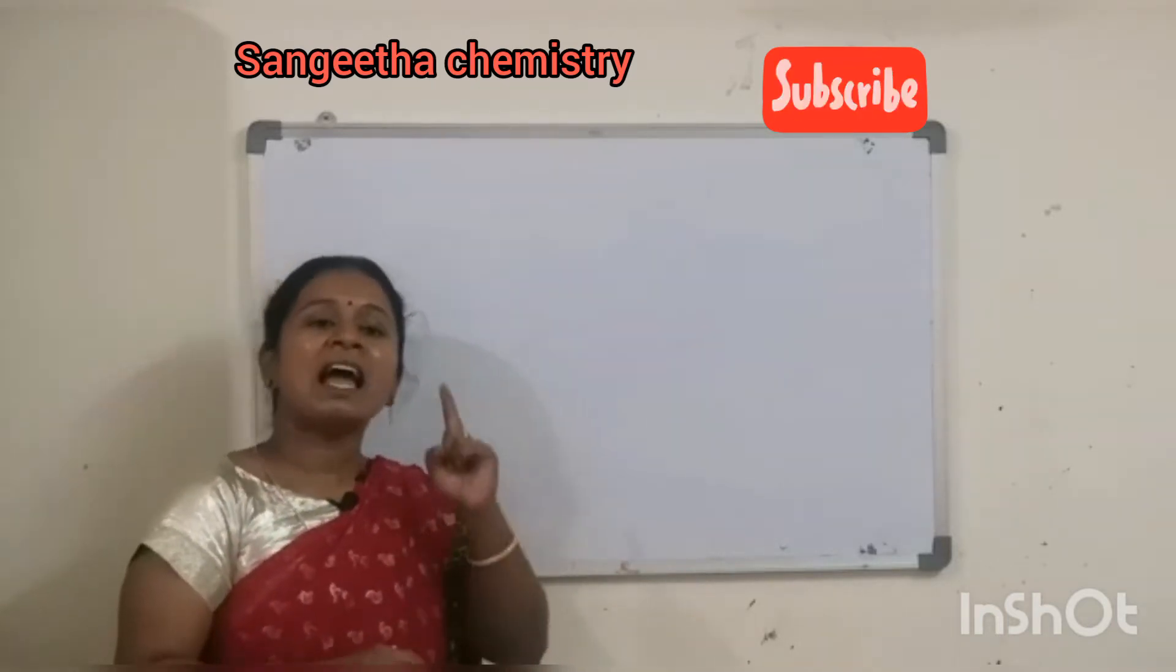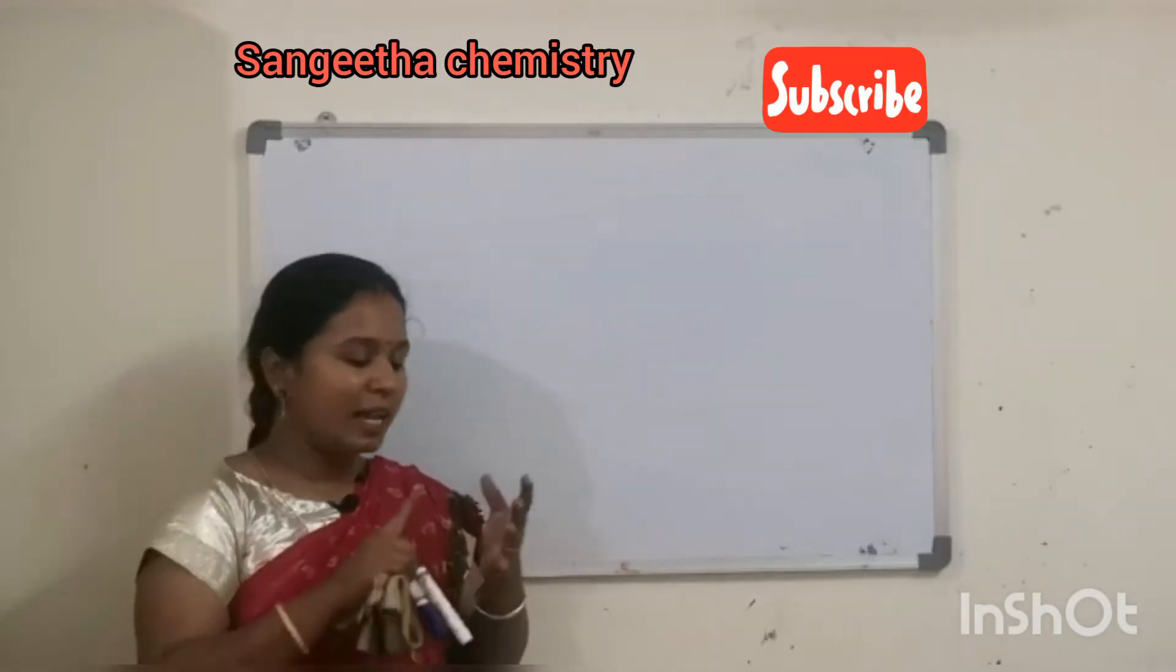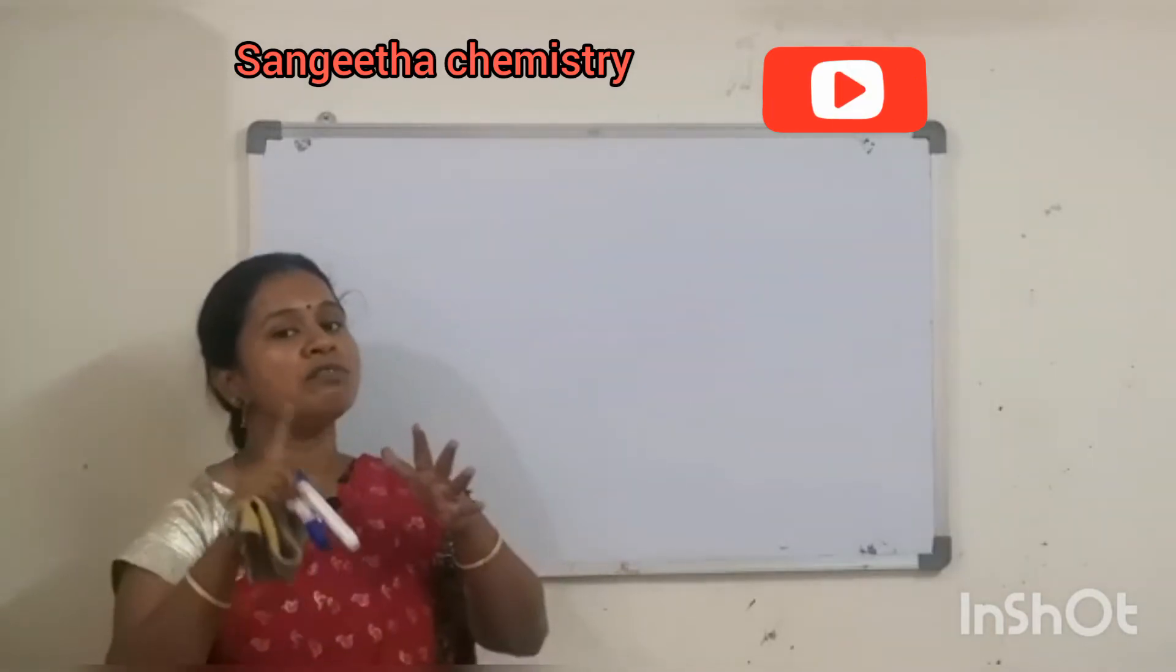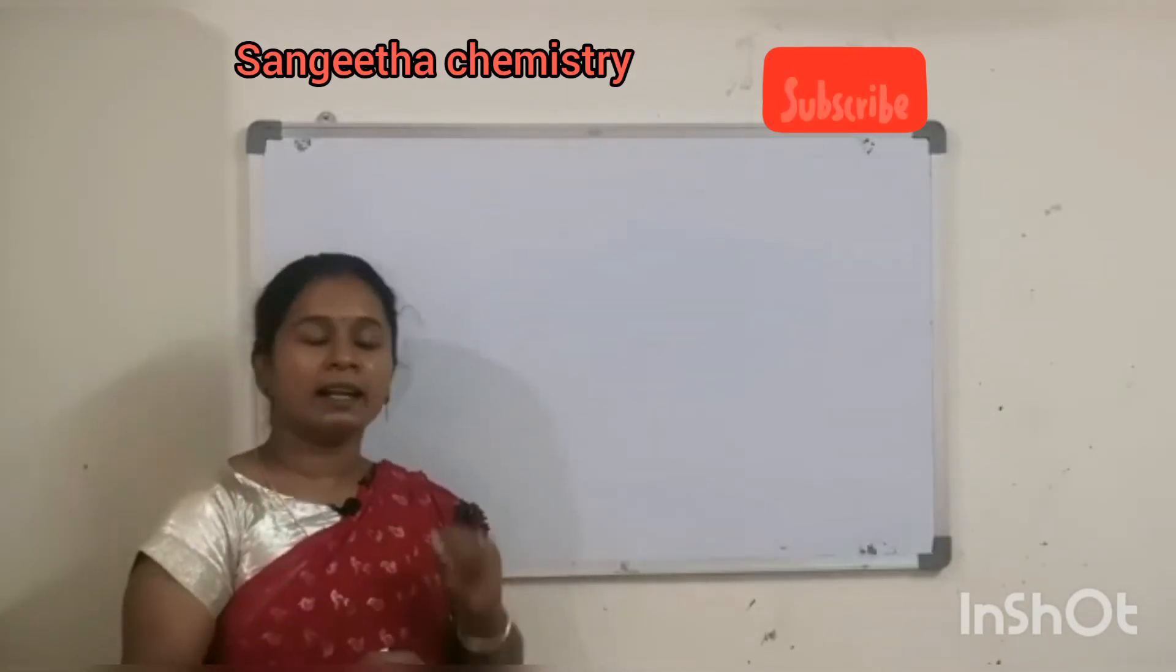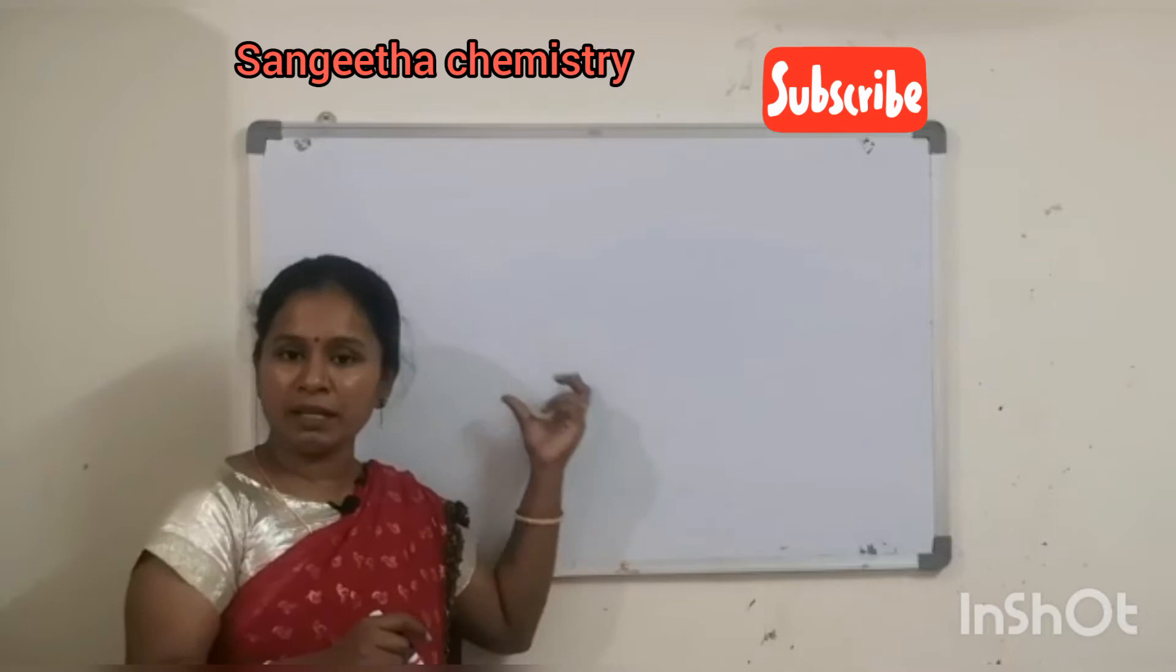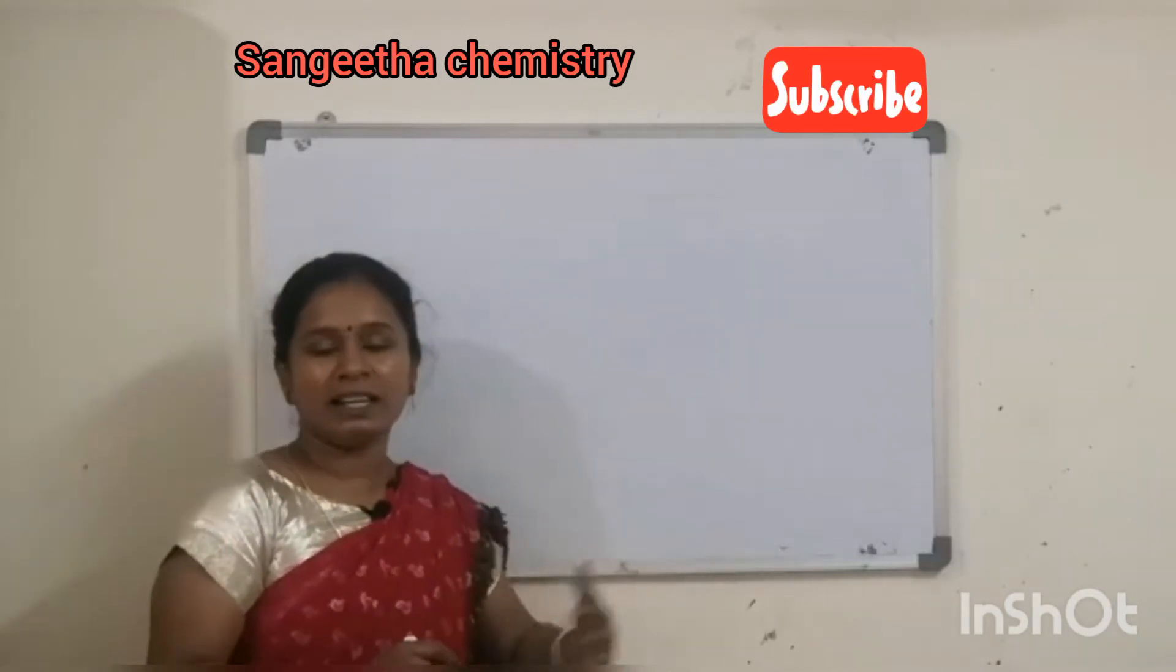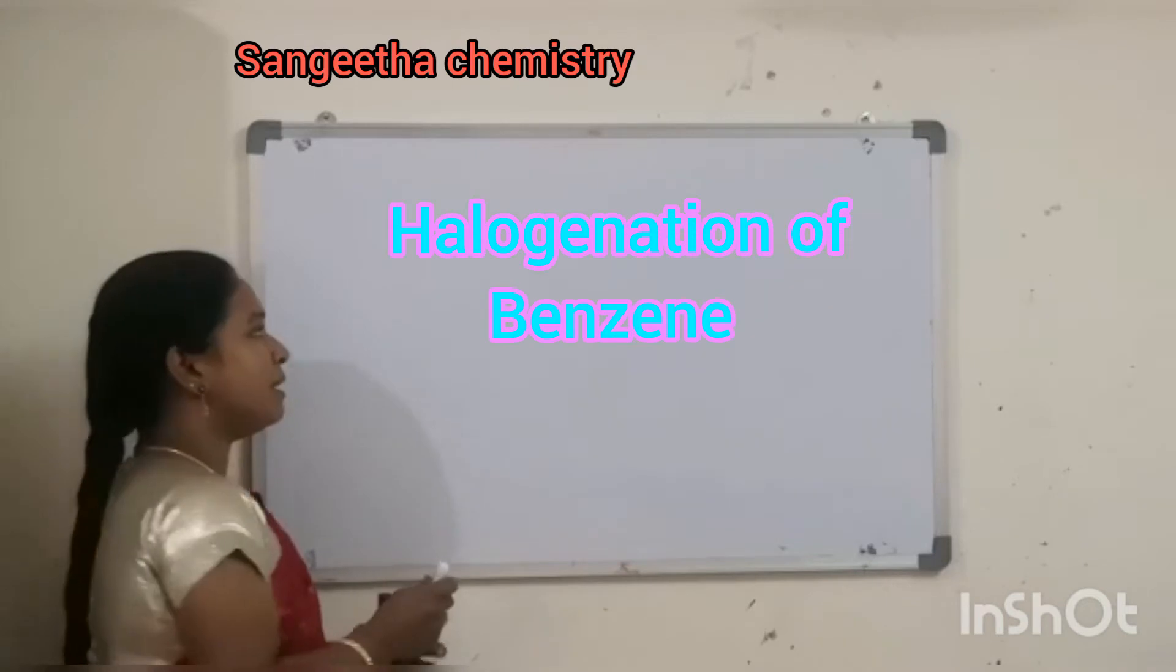First, what do we talk about? Halogenation of Benzene. Now we will talk about halogenation. So same, Electrophilic Substitution Reaction of Aromatic Ring or Aromatic Compound. Aromatic compound, for example Benzene. Electrophilic substitution, that is nothing but halogenation or Friedel-Craft alkylation, acylation, nitration. So first, halogenation of Benzene.